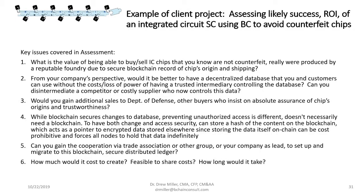Here's an example of a client project we did — another supply chain example. Integrated circuit companies have huge problems with counterfeit chips being made in China, Korea, and North Korea. This company was looking at advantages of using a blockchain supply chain system to control their supply and prove to their major client — the Department of Defense — that their chips really came from an authorized plant in Taiwan and not some counterfeit chip from China. There were many issues to consider beyond counterfeiting reduction, including feasibility with partners, all evaluated through the multi-criteria decision analysis process.